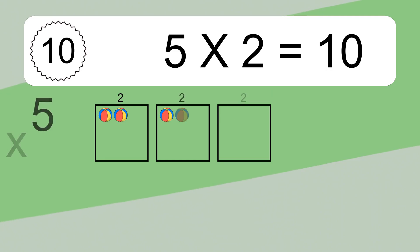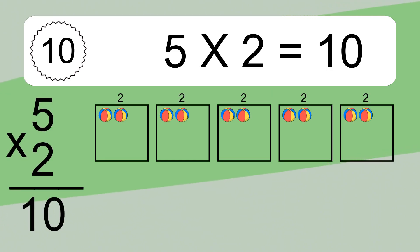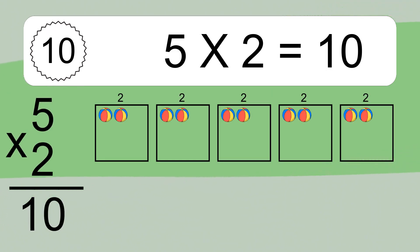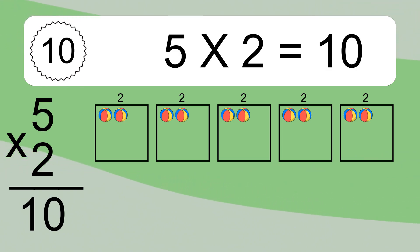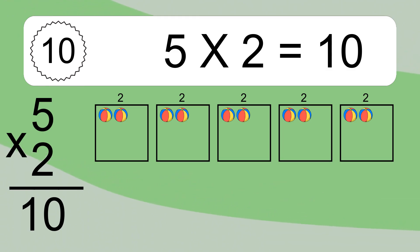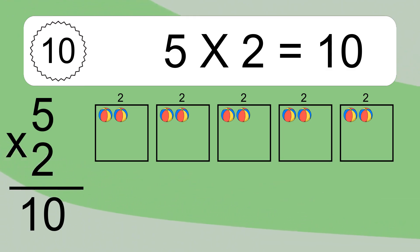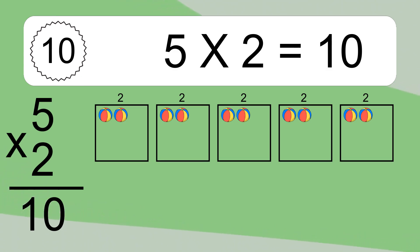5 times 2 equals what? 5 times 2 equals 10. We have 5 boxes, and each box has 2 colorful balls inside. If you count all the balls in all the boxes together, you will have 5 times 2 balls. This equals 10 balls.